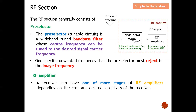One specific unwanted frequency that the pre-selector must reject is the image frequency. The key idea of the pre-selector is to reject the image frequency — this will be explained further in the next video. Regarding the RF amplifier, a receiver can have one or more stages depending on cost and desired sensitivity. The more sensitivity required, the more signal gain the RF amplifier must provide.